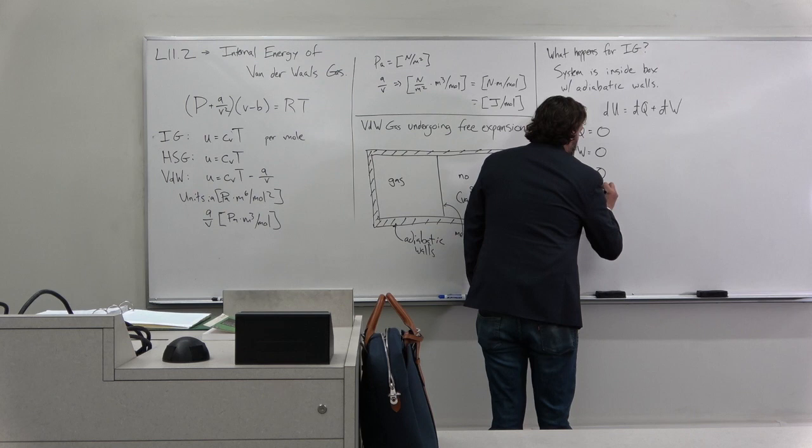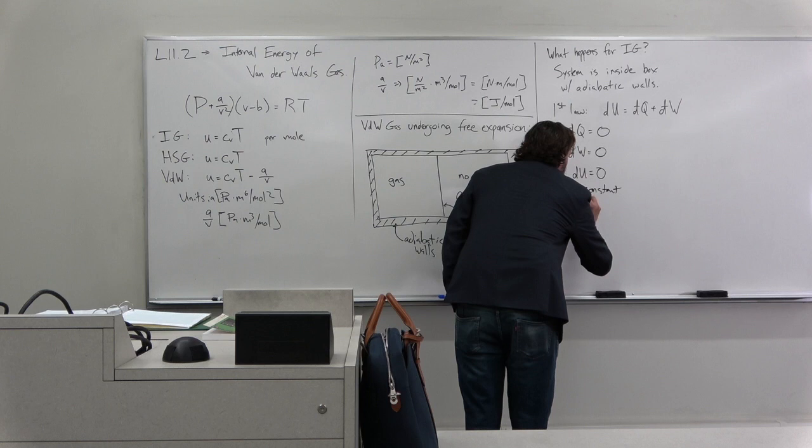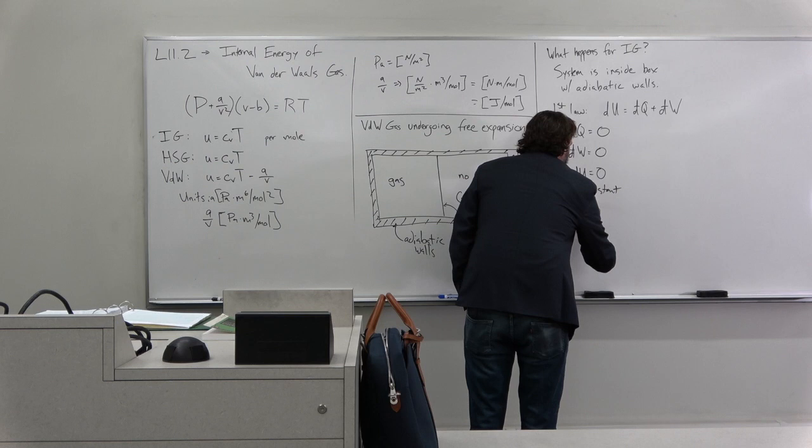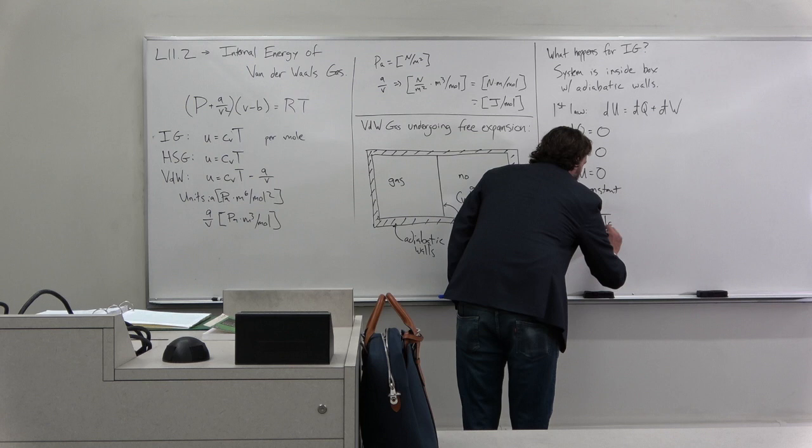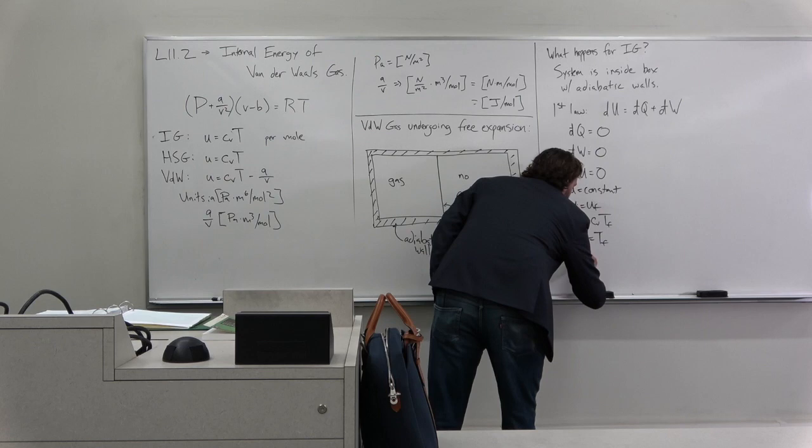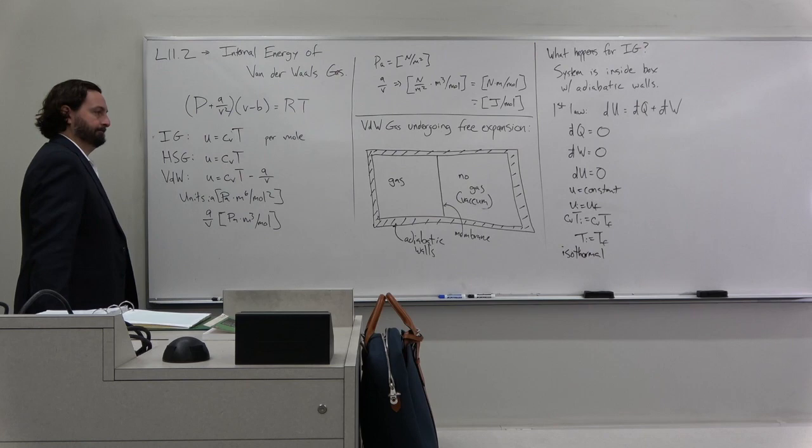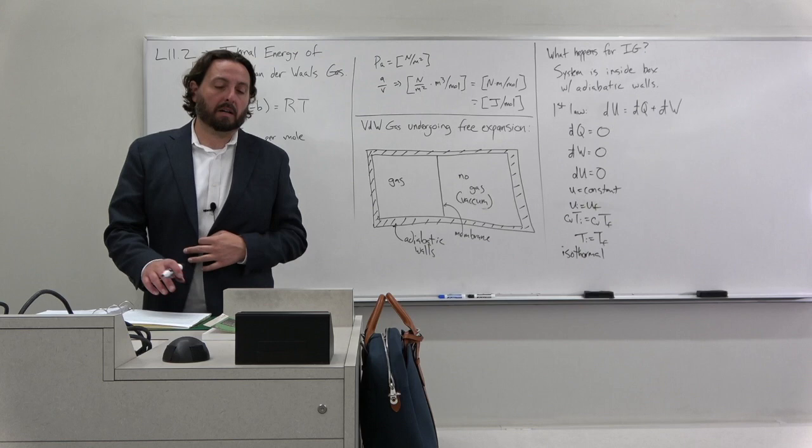And if DU is zero, that meant little U was a constant, or U initial equals U final. Or let's call it U initial equals U final, which meant that CVT initial equals CVT final. So this says that for an ideal gas, this is an isothermal process. This is described in section 2.6.